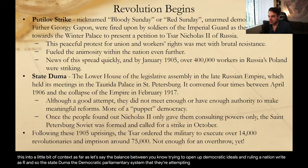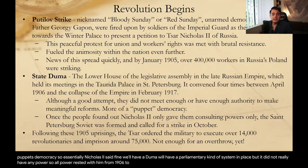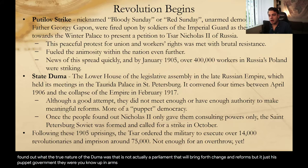The State Duma — the democratic parliamentary system they were attempting to establish — was convening here and there, but it was seen as more of a puppet democracy. Essentially, Nicholas II said fine, we'll have a Duma, but it did not really have any power. All power rested with him. From 1906 to 1917 they only met four times, so it was not too effective. Once people found out the true nature of the Duma — that it was just his puppet government — they were up in arms, calling for strikes and wanting to have their voices heard.